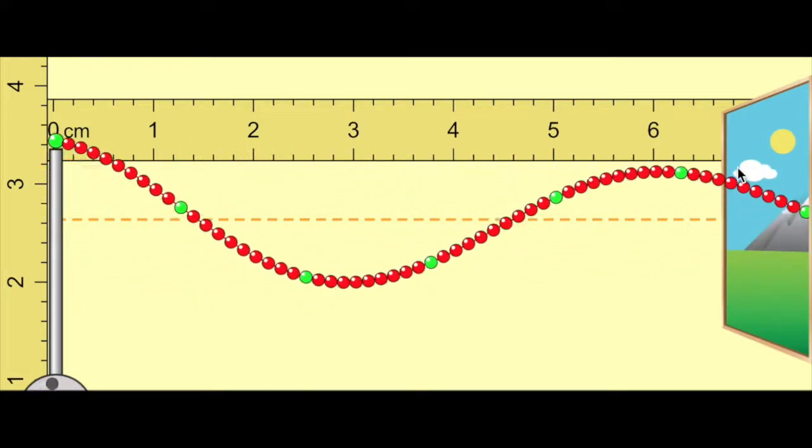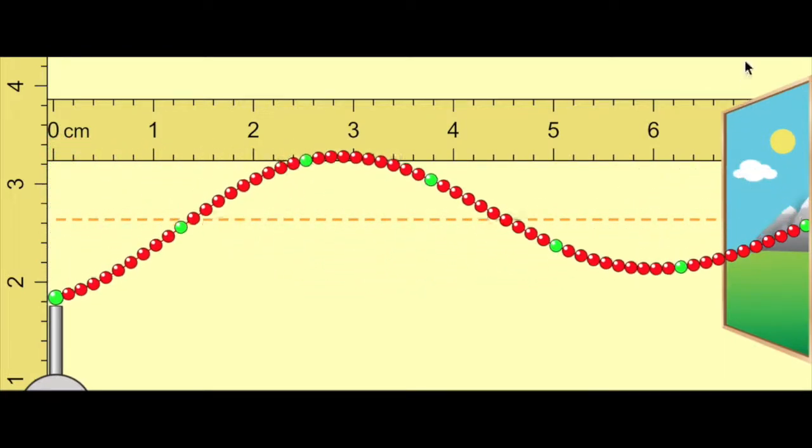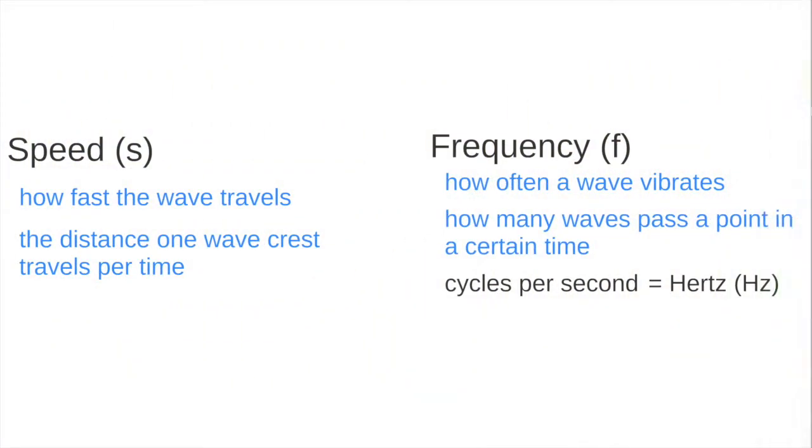So even though the frequency of these two waves was different by a factor of three, the speed was about the same. So waves have a speed and a frequency. There is a third aspect of waves called the wavelength.